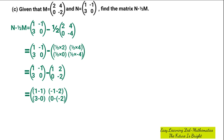Evaluating each: 1 minus 1 gives 0; negative 1 minus 2 gives negative 3; 3 minus 0 gives 3; 0 minus negative 2 — the two negatives form a positive — gives 0 plus 2, which is 2. So the final matrix is [0, -3, 3, 2]. That is the answer examiners expected.